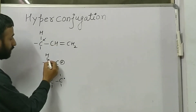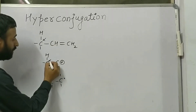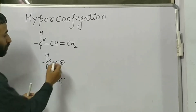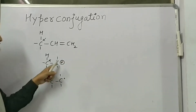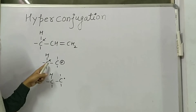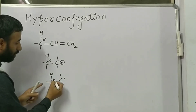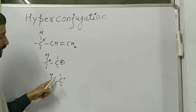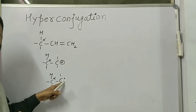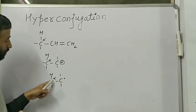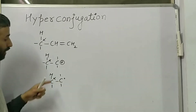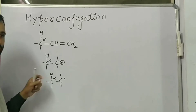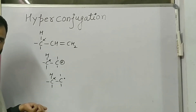The saturated carbon next to a carbocation is also known as alpha carbon, and likewise the saturated carbon next to a free radical is also called alpha carbon. The hydrogen attached to alpha carbon is known as alpha hydrogen.